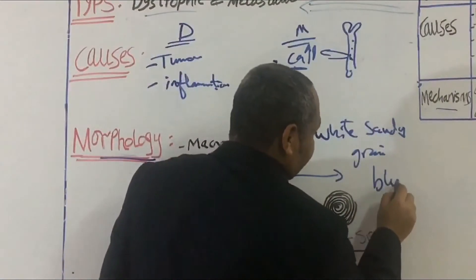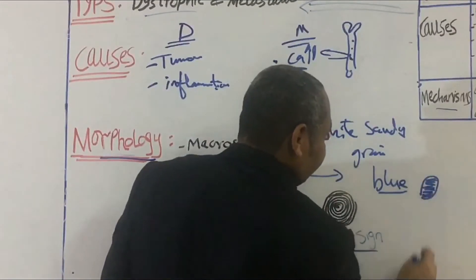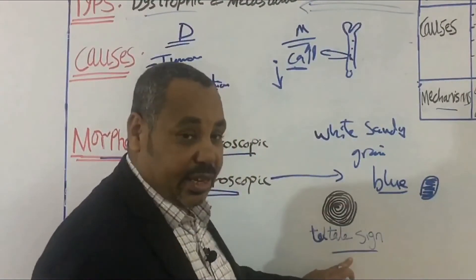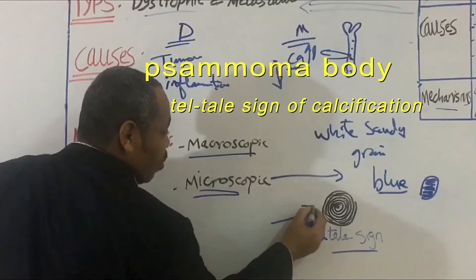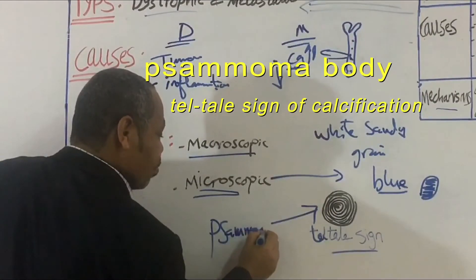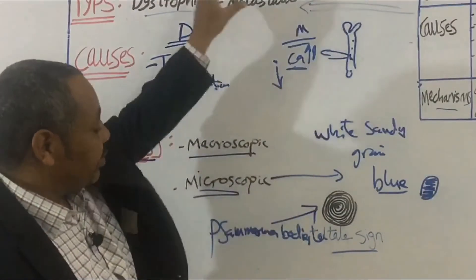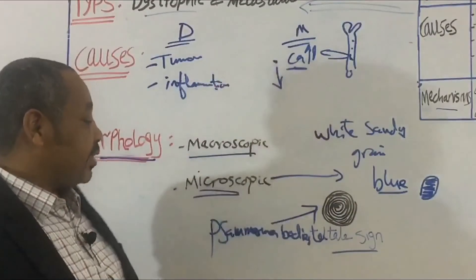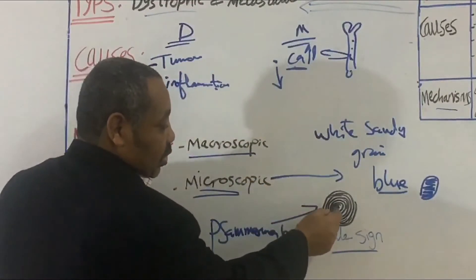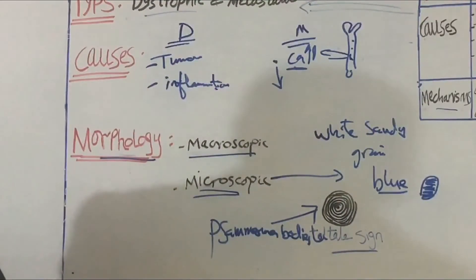Under the microscope, calcification appears blue. Sometimes you may find a telltale sign called psammoma bodies — a laminated calcium deposition with concentric layers, one over the other. This is a characteristic telltale sign for calcification.